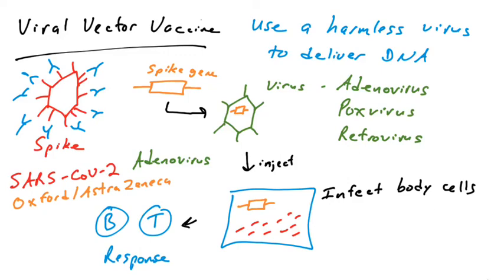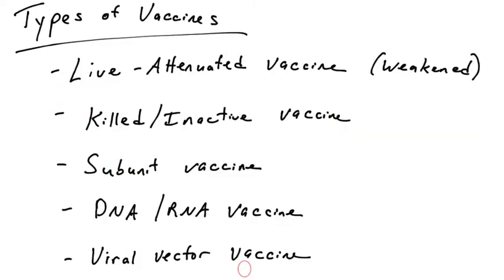Those are viral vector vaccines, which brings us to the end of the different types of vaccines. The whole goal is to help the immune system generate a strong adaptive immune response — B cells and T cells — that will ideally give lifelong immunity, or enough of an antibody and T cell response to either repel the infection, prevent you from becoming infected, or if you do become infected, to lessen the viral disease.